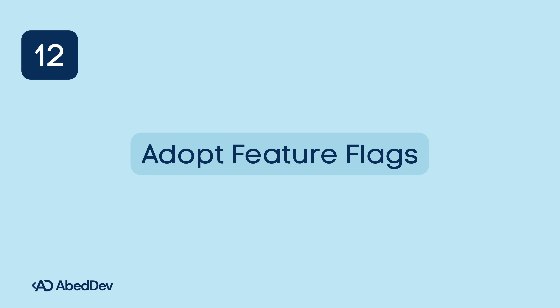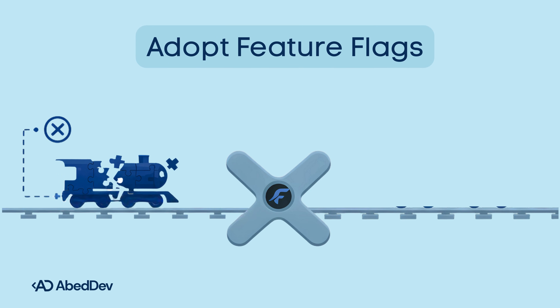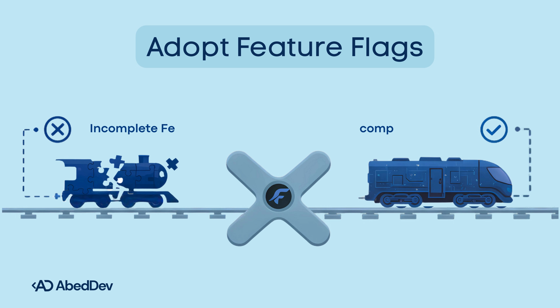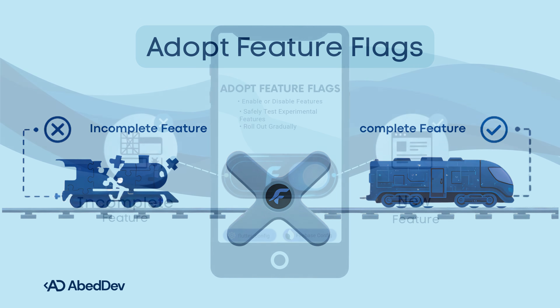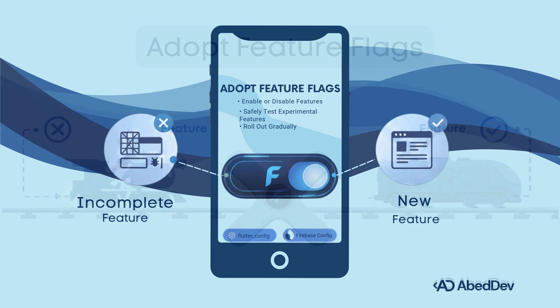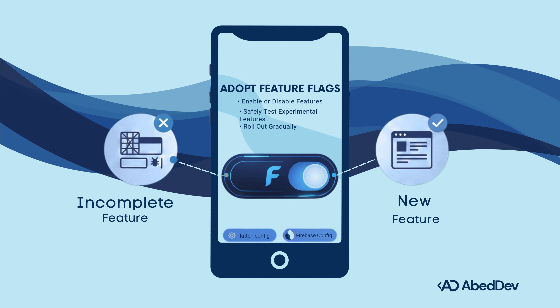Adopt feature flags. Instead of pushing incomplete features into production, use feature toggles. Enable or disable features remotely, safely test experimental features, and roll out gradually without redeploying. Use packages like flutter_config or integrate with Firebase Remote Config.